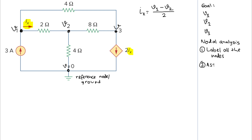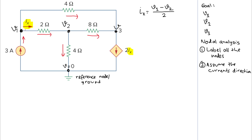Next we assume the current direction. For ix I just follow the arrow so it goes to the right. Usually for the horizontal components the current goes to the right, and for the vertical component the current usually goes down — except for the branch with the current source, where I just follow the arrow.